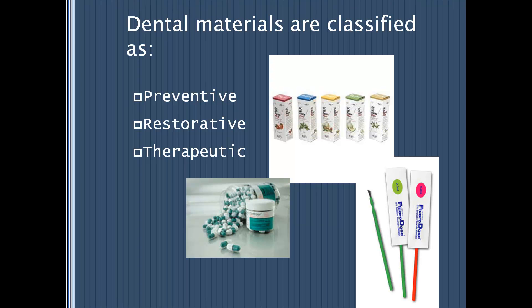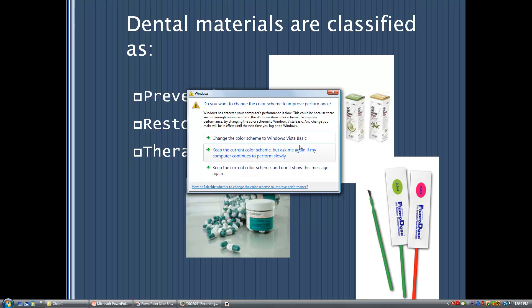Dental materials are classified in three ways: preventive, restorative, and therapeutic. Preventive materials include fluoride, sealants, mouth guards, night guards, xylitol, and MI paste, which provides calcium and phosphorus in a bioavailable form so that teeth can absorb them to be strengthened — it actually helps to reverse demineralization.